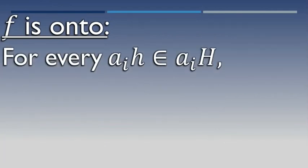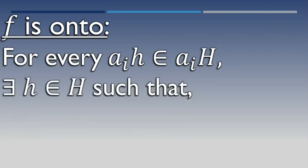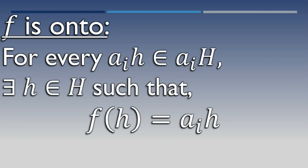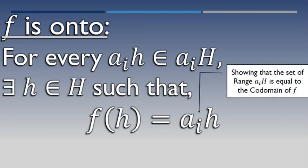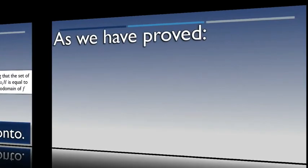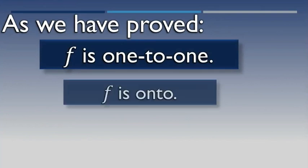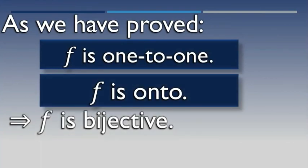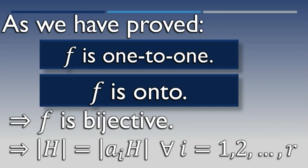Next we prove f is onto. For any element aih in the left coset, there exists h belonging to H such that f(h) = aih, showing the range of f equals the co-domain. Therefore f is onto. Since we have proved f is one-to-one and onto, f is bijective. Therefore the order of H equals the order of aiH — there is a one-to-one correspondence between them.